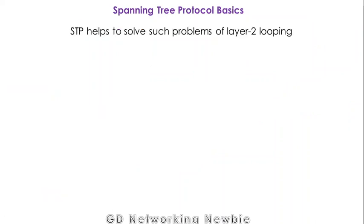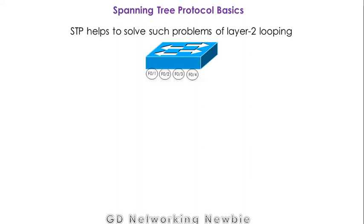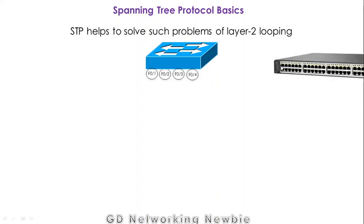This specific problem is known as Layer 2 looping. Spanning Tree Protocol exists to help solve the problem of Layer 2 looping. We just saw how Layer 2 looping occurs, and Spanning Tree Protocol is a rule that saves us from this kind of problem. Spanning Tree Protocol works by managing the ports or interfaces of the switch.